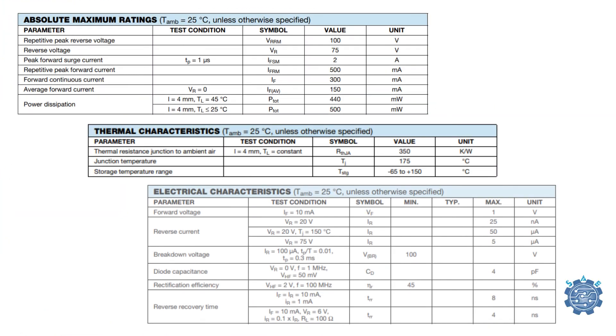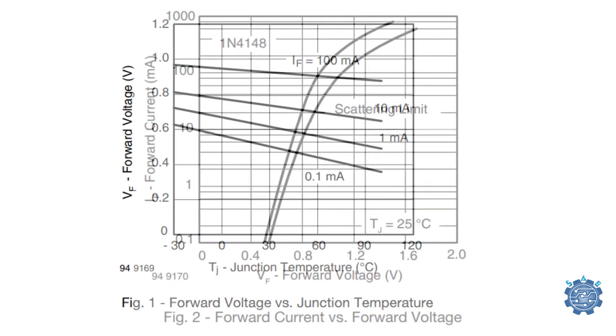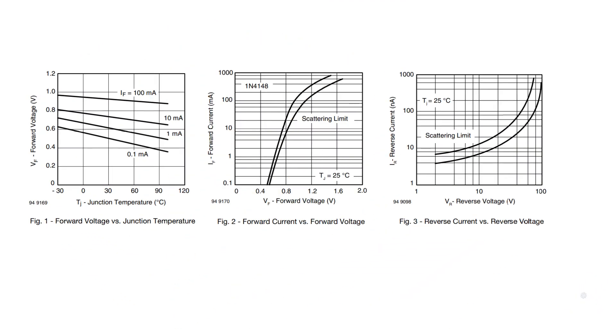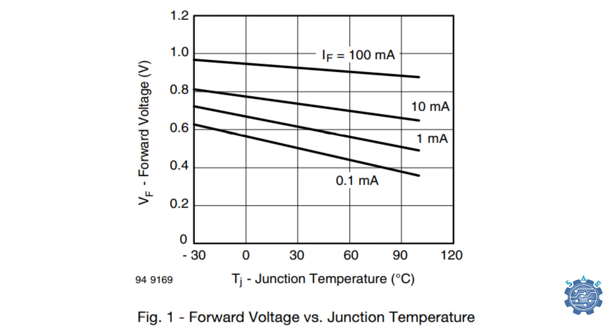Besides tables, there are also some graphics that show interesting behavior of diodes in different situations. For example, in the graph in which the forward voltage is varying with junction temperature we can see that the voltage gets lower as the temperature gets higher.